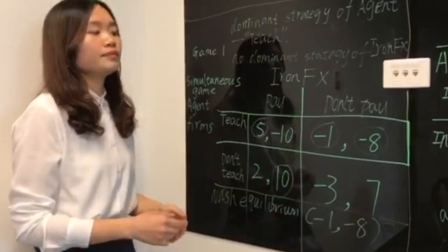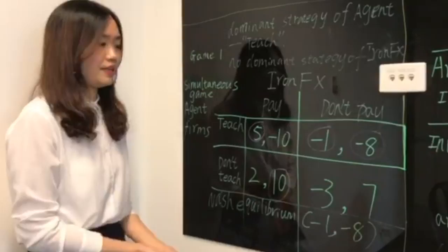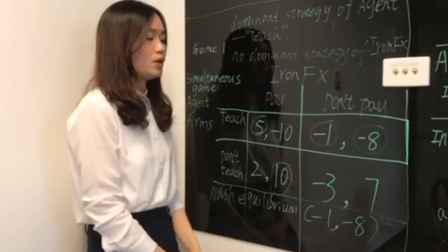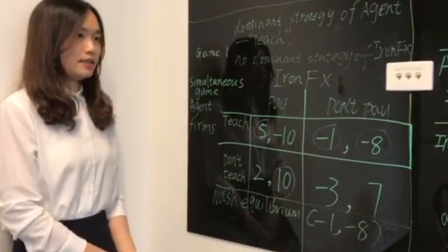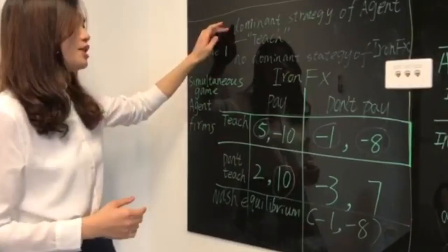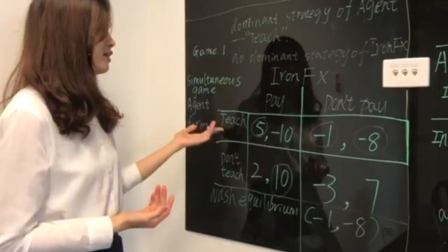For this one, the agent firm chooses to don't teach and INFX don't pay the commission. It will reduce the agent firm's profit because of don't pay, and it will also reduce the customer. The payoff will be less than before. In this game, the Nash equilibrium is this one, minus 1 and 8, because the dominant strategy of the agent firm is to teach. However, there is no dominant strategy for INFX.